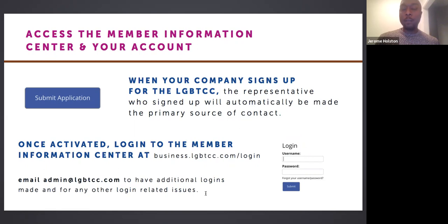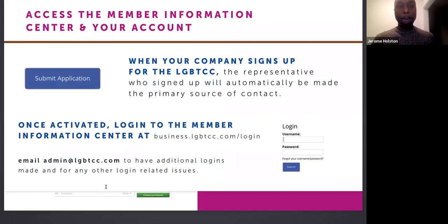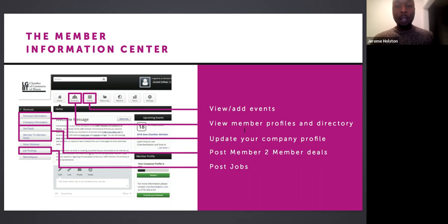If you can't recall the password or username, it is likely the same one that you used when creating your application — so likely your business email address or a personal email address that you use pretty often. The member information center has tabs for events, resources, and the directory where you can see other member profiles. You can also update your company information, post deals, and post company jobs as well.